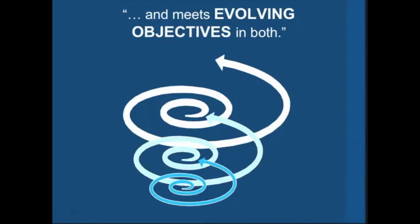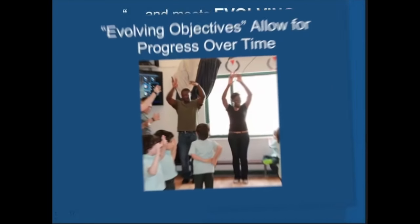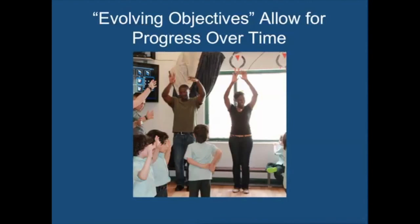This final part of the definition underscores two ideas. First, Arts Integration requires teachers to set objectives in both the art form and the other subject area. The dual objectives are balanced. Students are accountable for significant learning in both the art form and the other subject. It is important to allow for progress over time. A student does not learn to express ideas through dance in just one lesson. It takes time to develop skills in the arts, just as in any other subject.